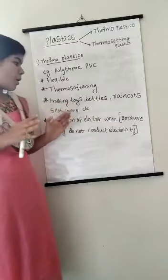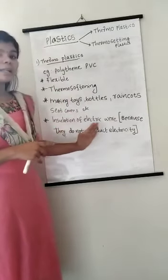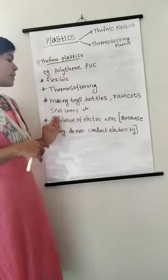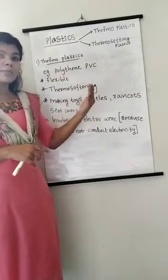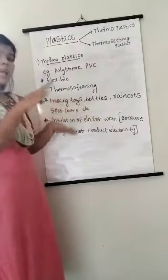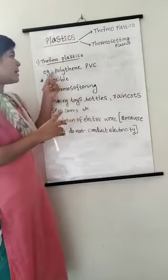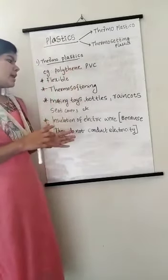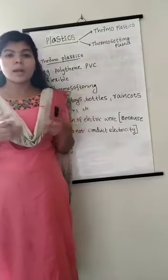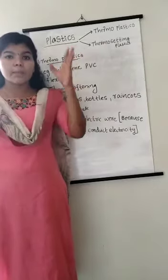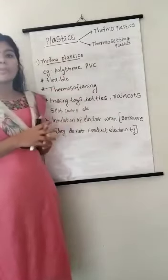Insulation means the covering of electric wires. Thermoplastics are used for insulation because they do not conduct electricity. Thermoplastics can adopt different shapes on heating, so they are flexible and can be bent without breaking. For example, when you take a bottle and add some hot water in it, the shape of the bottle changes — that is deformation.